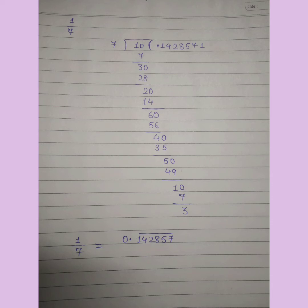अब remainder 1 बचा। Question में भी 1 था, यहाँ भी 1 है। इसका मतलब अगर मैं वापस से 0 लेती हूँ, तो 7 × 1 = 7, remainder 3 — यानी जो पहले वाले numbers थे 1, 4, 2, 8, 5, 7 — वो वापस बार-बार repeat होंगे। इसलिए 1/7 का answer है 0.142857 bar।